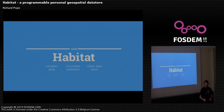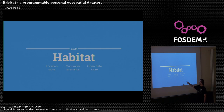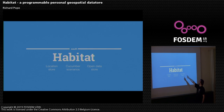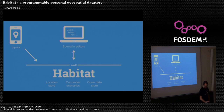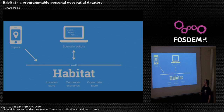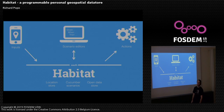Habitat is a data store — it collects and stores location data about an individual. It has a bunch of cucumber tests stored within it, and in the future will also have open data sources like OpenStreetMap polygons layered on top. It has a basic API with OAuth, and can take inputs from a bunch of different places. You can also edit the cucumber tests via the API. Every time data comes in, these cucumber tests get run over the data, and then potentially stuff happens.